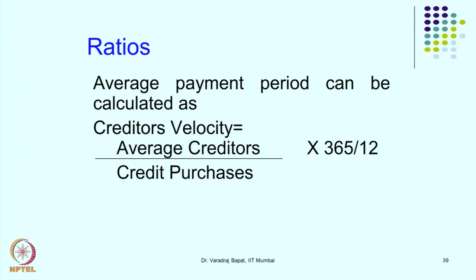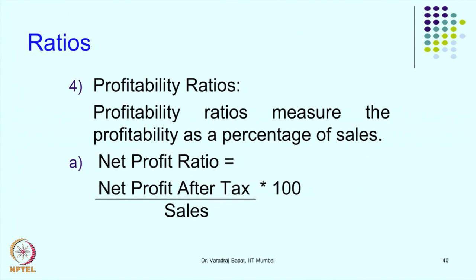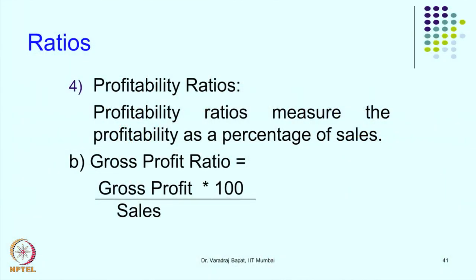Now we will go to the next type of ratios: profitability ratios. Our earlier discussion on ratios had started with the net profit ratio. These ratios are also known as P&L ratios because both numerator and denominator come from the P&L, and as the name suggests, they tell us about the profitability of the business in relation to turnover or sales. One important ratio is the net profit ratio — net profit after tax divided by sales. For gross profitability, we use the gross profit ratio, which is gross profit divided by sales, also known as gross margin.